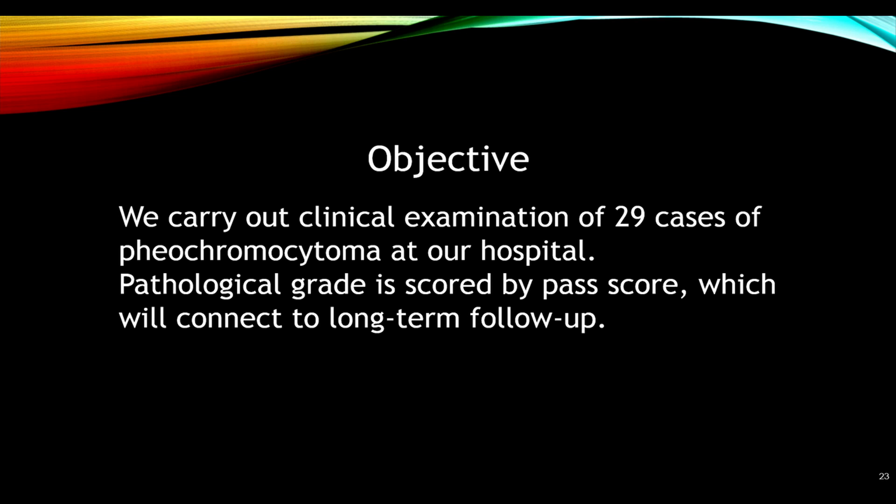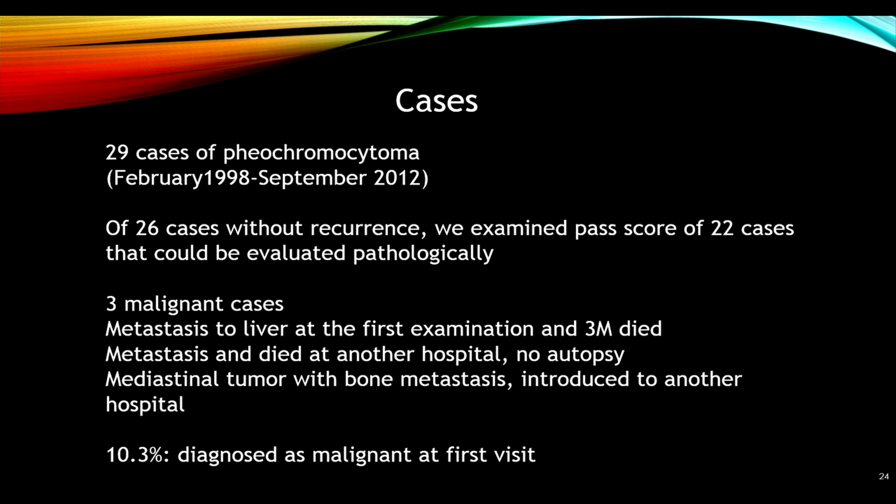We carried out a clinical examination of 29 cases of pheochromocytoma at our hospital. Pathological grade was scored by PASS score, and we collected long-term follow-up data. We focused on cases between 1998 and September 2012 because we could obtain pathological tissue blocks. Twenty-six cases had no recurrence; we examined PASS score in 22 of 26 cases, as we lost samples or follow-up for about four cases.